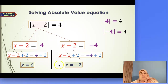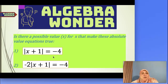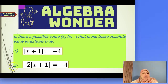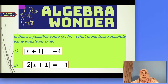Now it's time for the Algebra Wonder question. I have two absolute value equations. First: absolute value of x plus 1 equals negative 4 — is there a possible value for x that makes this true? Second: negative 2 times absolute value of x plus 1 equals negative 4 — is there a value for x that makes this true? Think about it, share your thinking with your classmates and family, and enjoy the math!